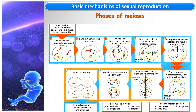We obtain two cells. Each of them contains n = 3 chromosomes, and each chromosome consists of two chromatids.